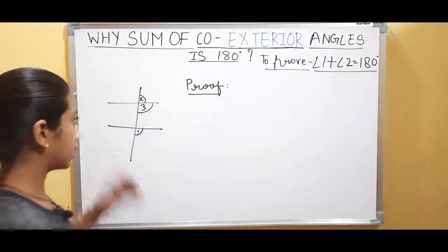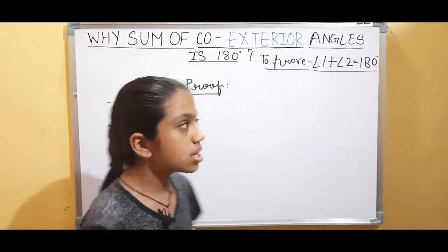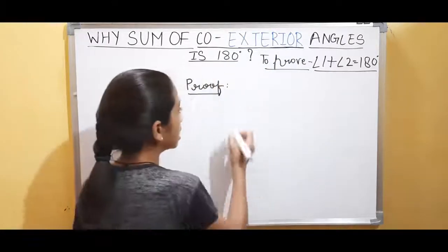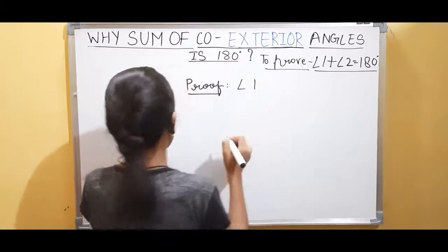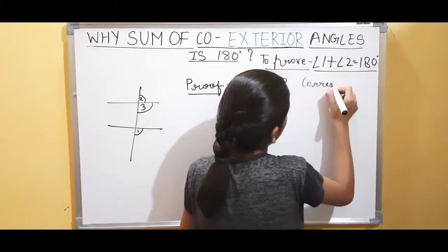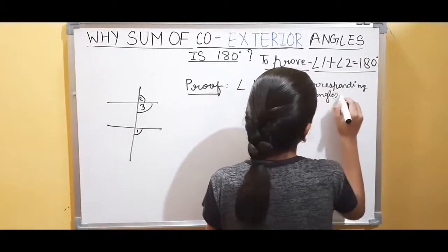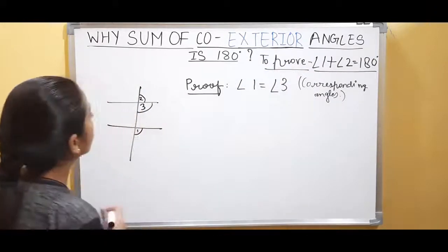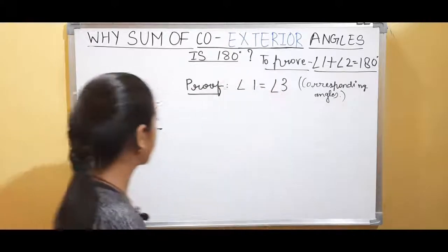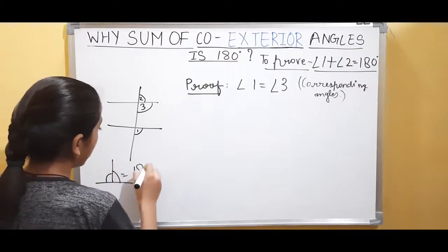I've made a new angle here. Let's name this angle as angle 3. As we know, angle 1 is equal to angle 3, because angle 1 and angle 3 are corresponding angles. Now, as we can see, angle 2 and angle 3 are forming a linear pair. We know a linear pair means the sum of two angles is equal to 180 degrees.